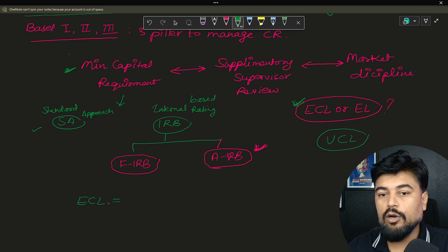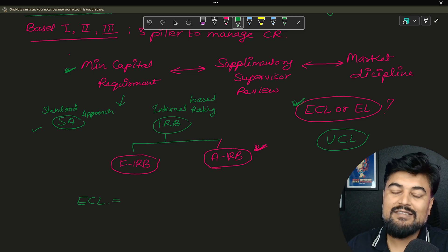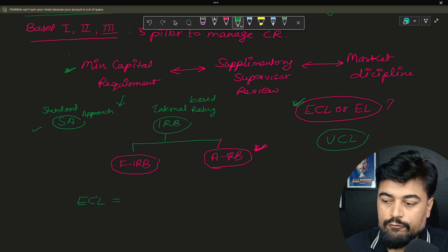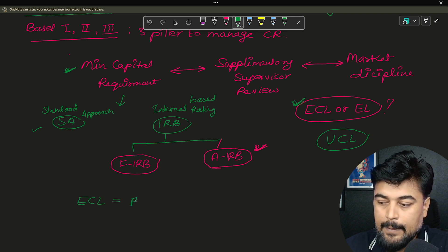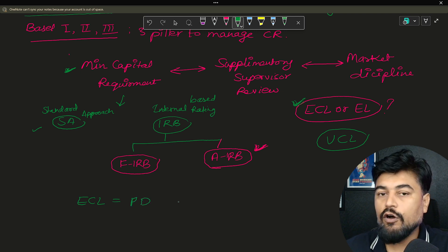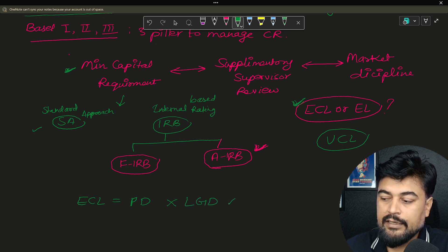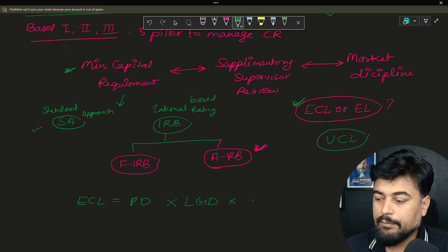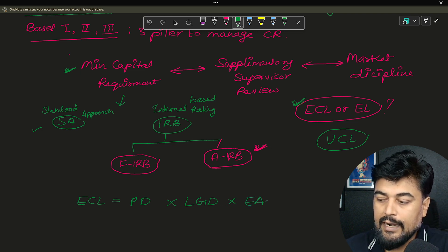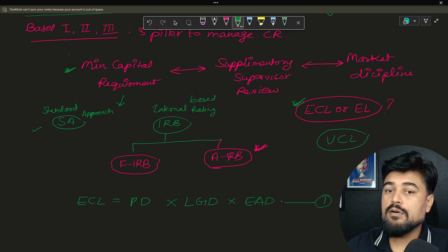Our focus is to target the expected loss so that the bank knows well in advance how much loss will happen if an obligor or a borrower is not able to pay the money back. So the formula of ECL is - in this course we are going to cover this whole thing, so we would be covering ECL end to end.